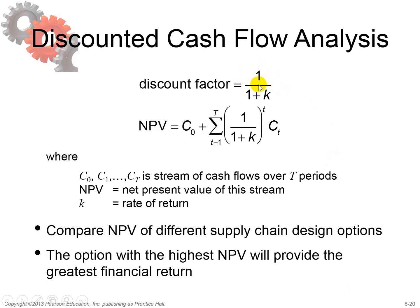How do you calculate that? You calculate the discount factor: one divided by one plus K, where K is the rate of return — you can also compare that with the interest rate. So if you want to know the net present value of one dollar in one year, you do one dollar divided by one plus ten percent, that is one divided by one point one, which equals zero point nine zero nine zero.